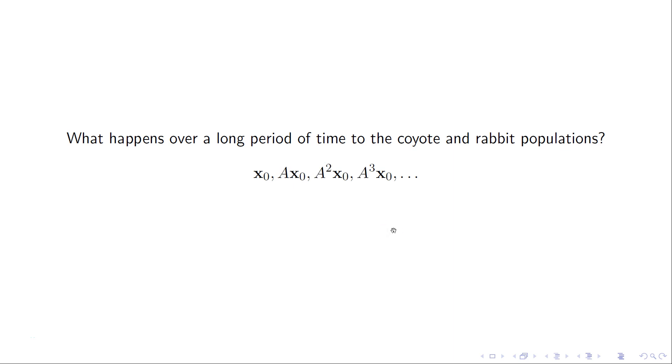A different way we could express that is this way. If I know what x0 is, that initial state, what are these A times x0, A times A times x0, and so on. What are these subsequent powers of A multiplied by x0? What happens to them?